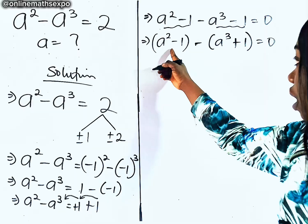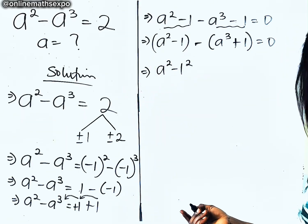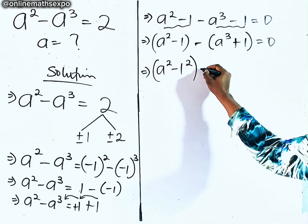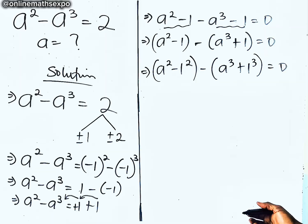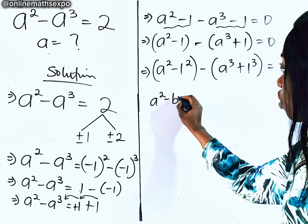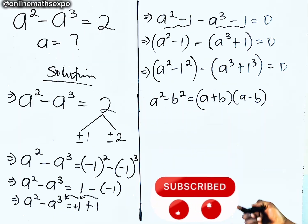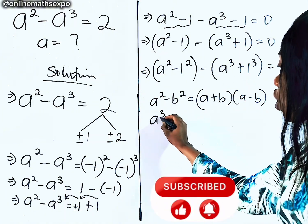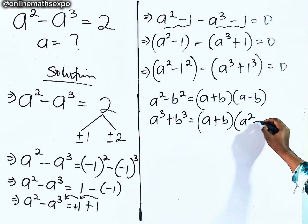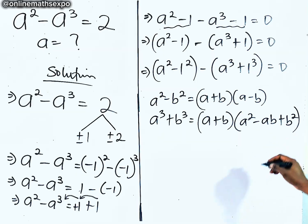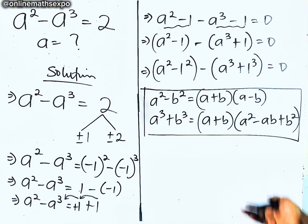So we are going to have A squared minus 1. For this part, we are going to factor negative out: negative A cubed. When negative opens with this, it gives you positive 1, equal to 0. Just remember that A squared minus 1 is the same as A squared minus 1 squared — because squaring 1 gives you back 1. So we have A squared minus 1 squared, and negative A cubed plus 1 cubed equals 0. This reminds you of A squared minus B squared equals A plus B into A minus B — difference of two squares — and A cubed plus B cubed equals A plus B into A squared minus AB plus B squared — sum of two cubes.